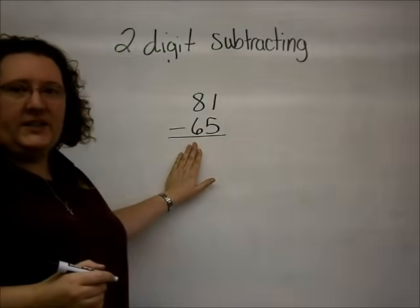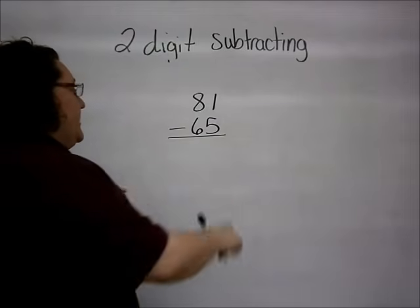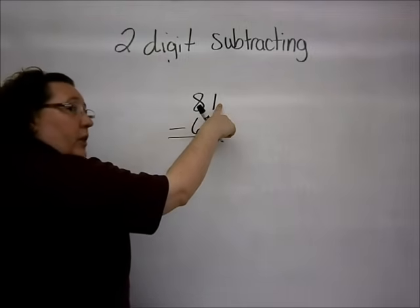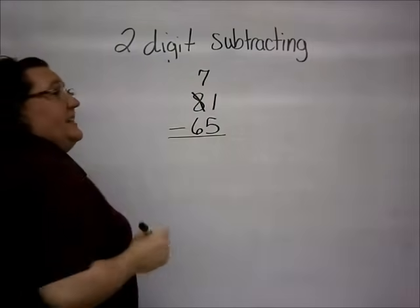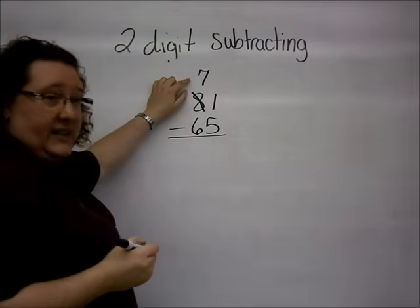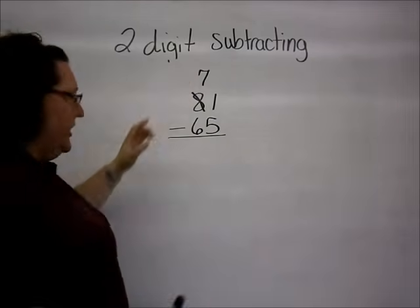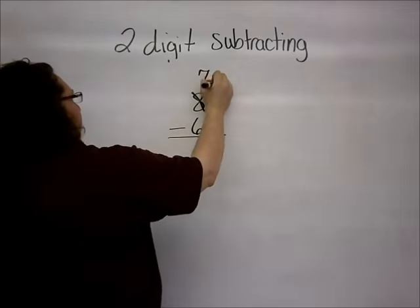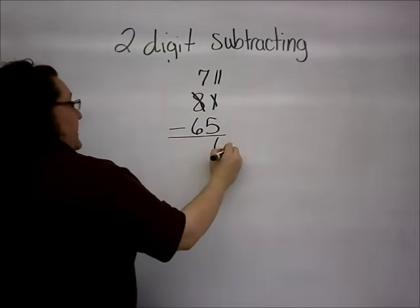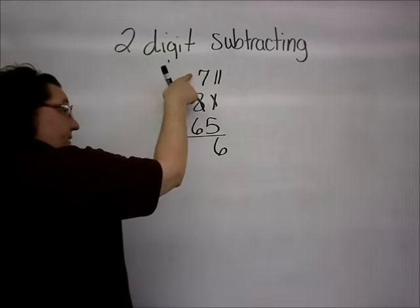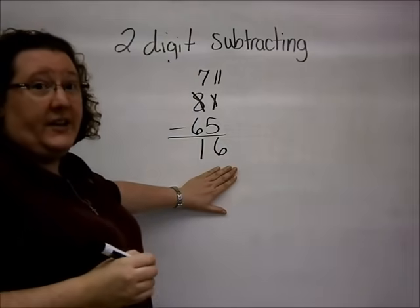So, we have 81 minus 65. Again, we'll start with the traditional method. Since my 5 is bigger than my 1, I cannot subtract, and I have to borrow. I borrow 1 from the 10s, so it becomes a 7. I take that one 10 and turn it into 10 ones. And when I add it to what I already have, I end up with 11. So, 11 minus 5 gives us 6, and 7 minus 6 gives us 1. So, we have a traditional method answer of 16.